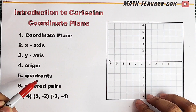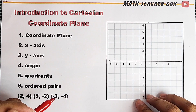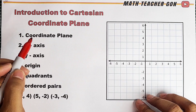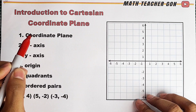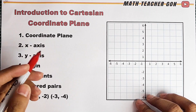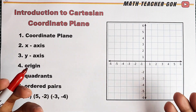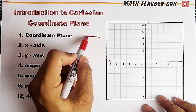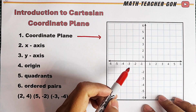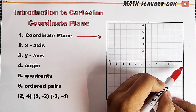So what we have here are terminologies that we need to remember when it comes to the Cartesian coordinate plane. Let's start with the coordinate plane. The coordinate plane is a two-dimensional plane formed by two number lines that intersect at right angles. This is an example of a coordinate plane — we have the vertical line and the horizontal line.